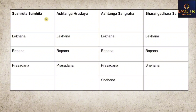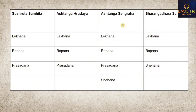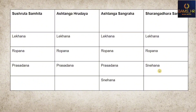When we correlate Sushrita, Ashtanga, and Sharangadhara, Lekhanam, Ropanam, and Prasadhana are considered by both Sushrita and Vagbhata. However, in Ashtanga Sangraha, Vruddha Vagbhata divided Prasadhana into two forms — simple Prasadhana and Snehana. Whereas Sharangadhara has not considered Prasadhana as a type or form of Anjana.